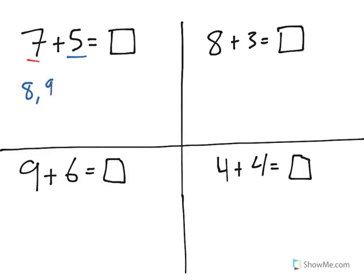So that would be 8, 9, 10, 11, 12. Our answer is 12. As you can see I counted five more and I got to 12. Counting on is one strategy.